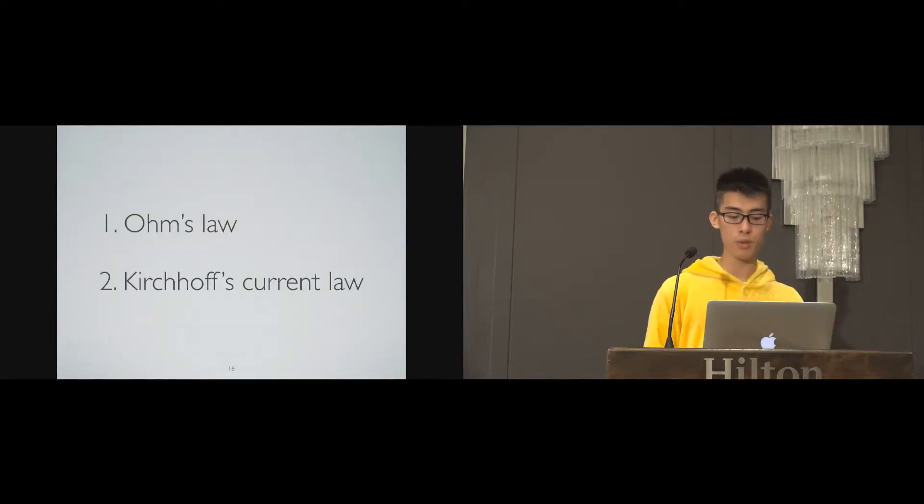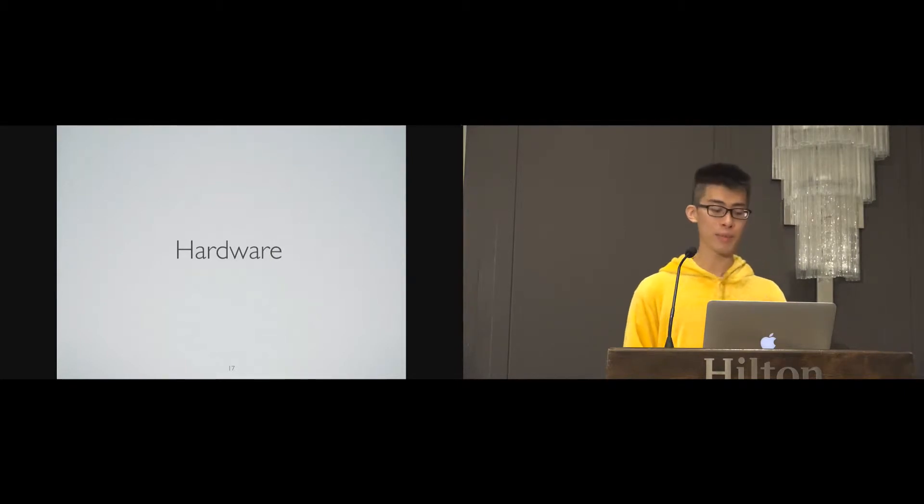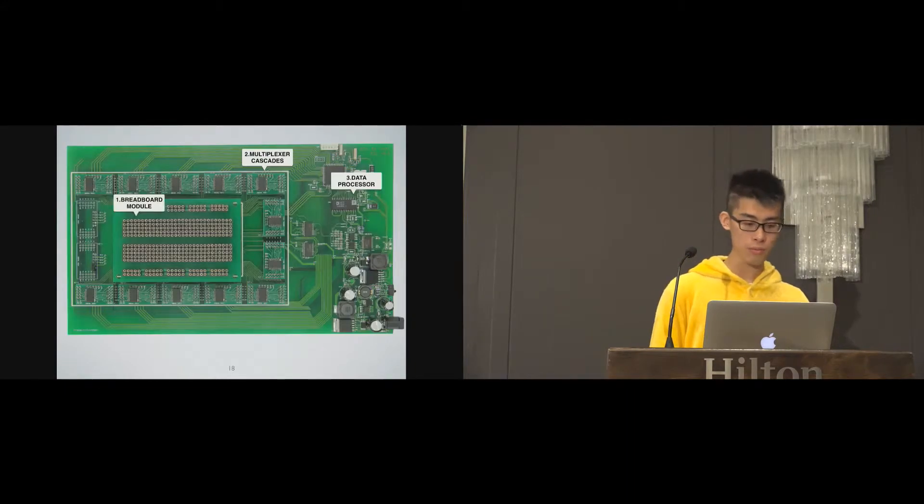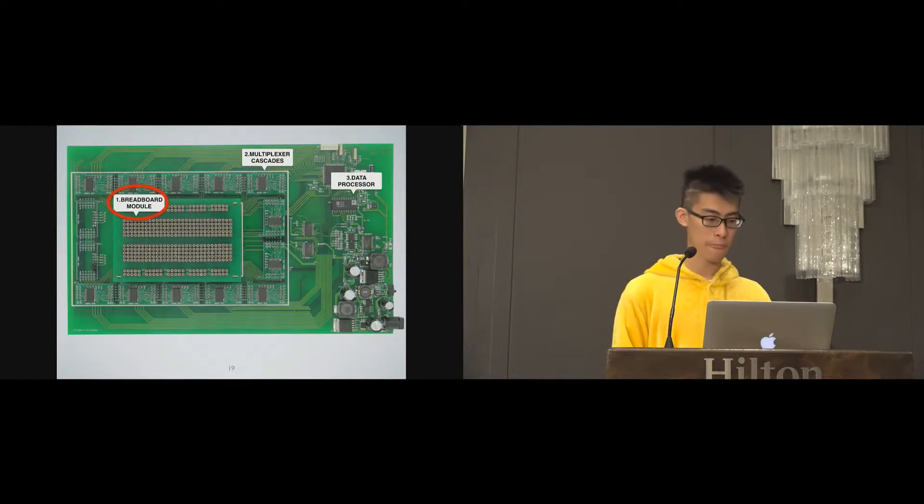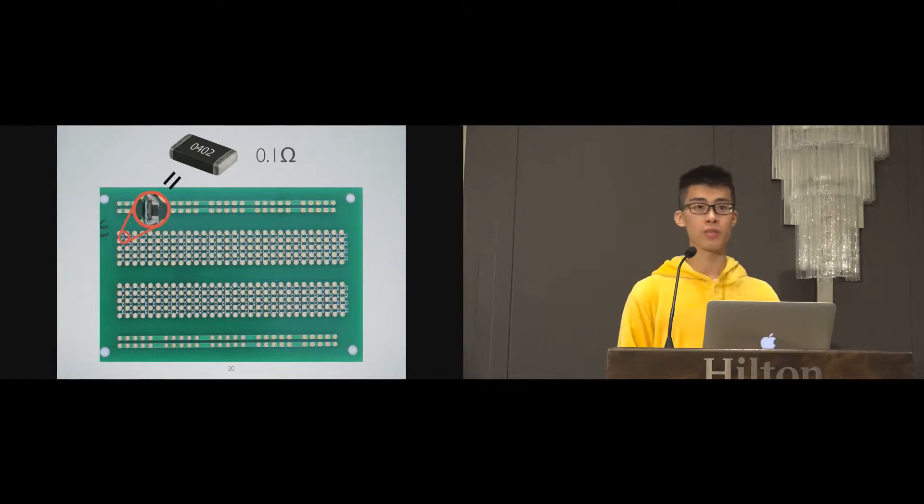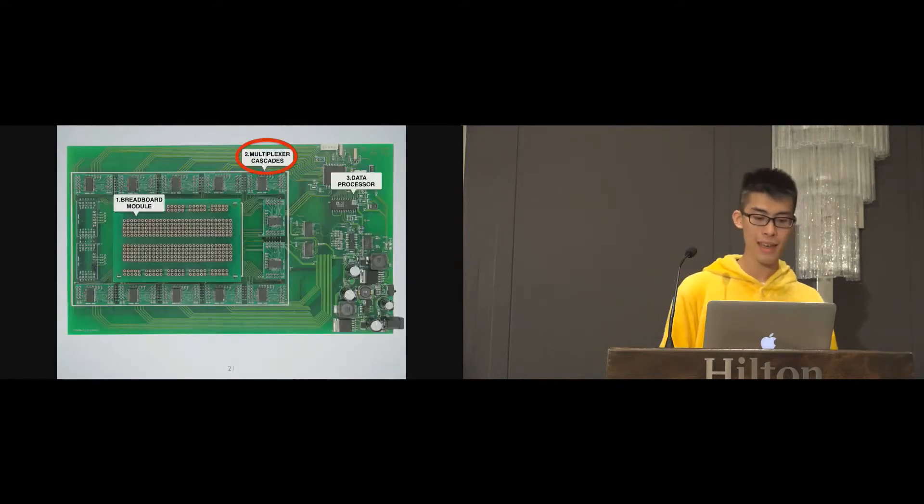Thus, with these two basic electrical theories, we can get all currents flowing through every hole on the breadboard. Then I will explain how we implement what we design into hardware in details. Here is the whole CurrentViz. We split it into three parts. First, the breadboard module. We weld 0402 resistors between every header under the board. The resistance value is very small compared with other components, so it is negligible.